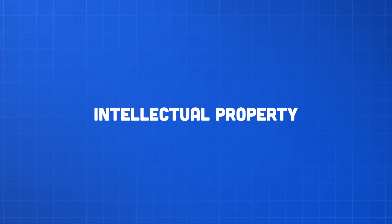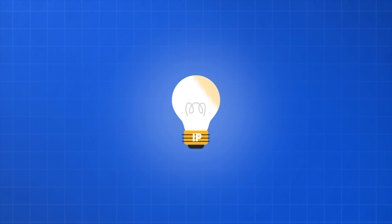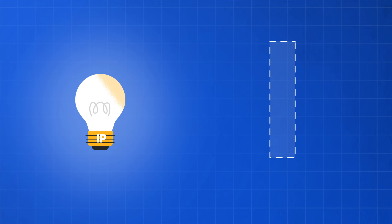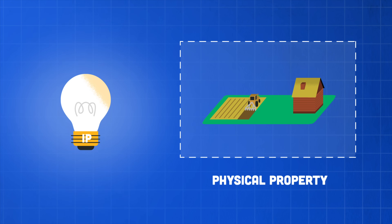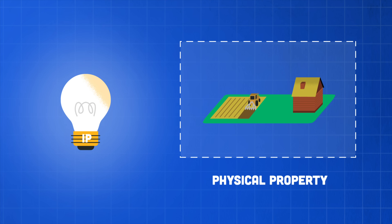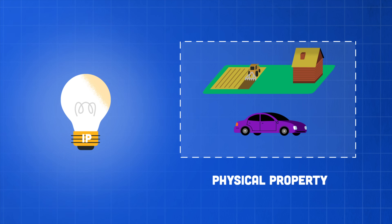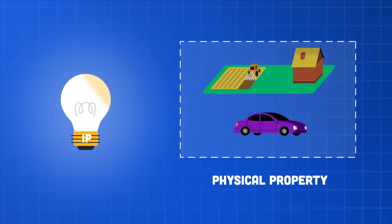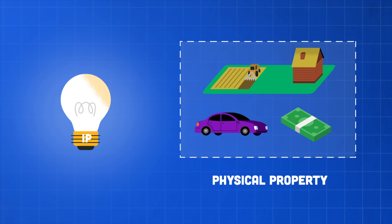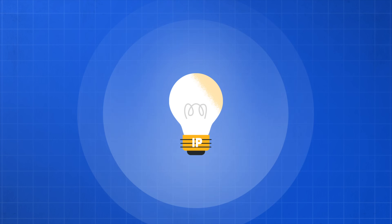Intellectual property is a domain of different systems of private rights that we establish in law, that operate in a way that's very analogous to conventional property in land or in tangible physical items, or even in other kinds of intangibles that we recognize as property, like your bank account, which is not physical, but which we think of as being yours.